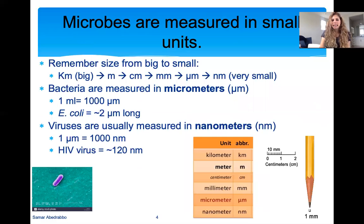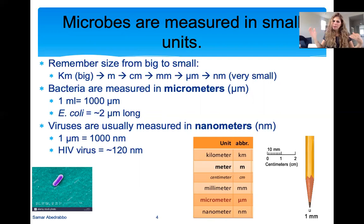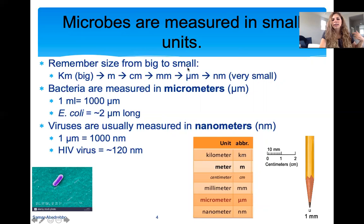I want to talk about units of measurement before we get into microscopes without overcomplicating it. You all know that kilometers are very big, and meters are very big. If we go from big measurements to really tiny ones: kilometers are very big — outside the US they use kilometers for driving distances. A kilometer is a thousand meter sticks. A centimeter you've seen on a ruler, and a millimeter is about the size of the point of a pencil.